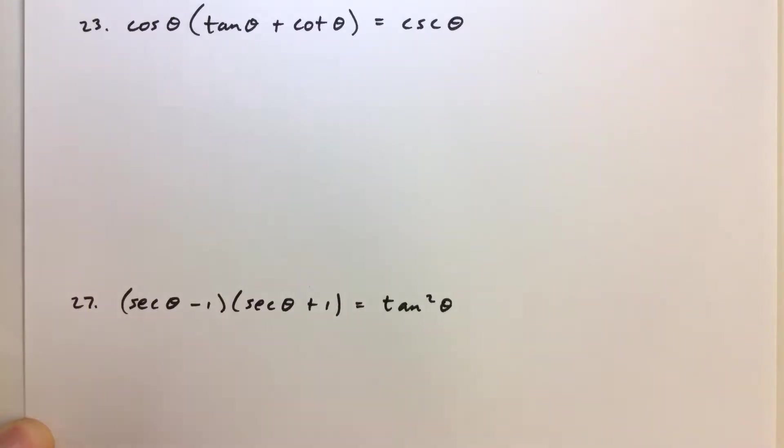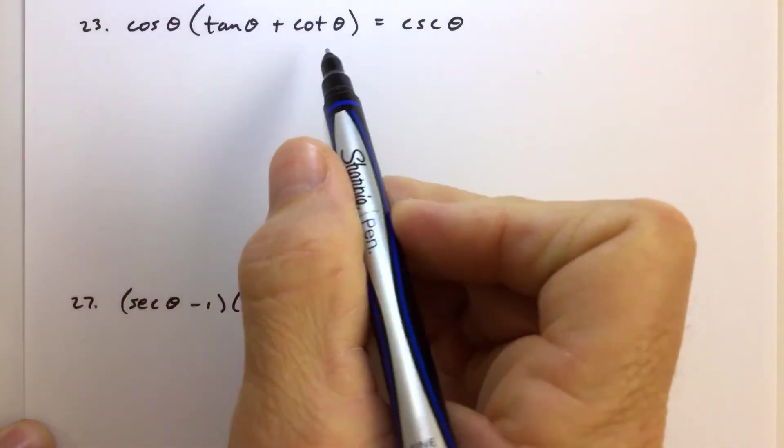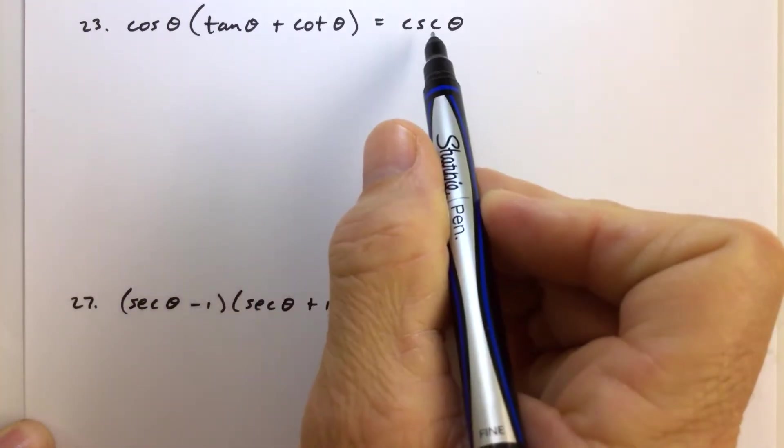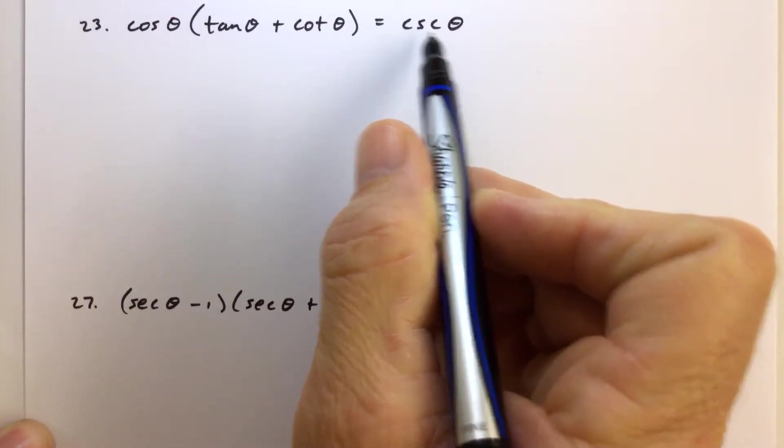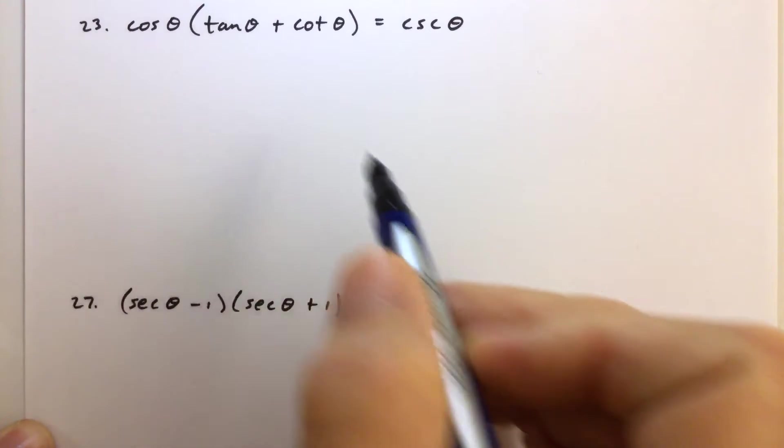the guidelines here, general guidelines are, choose the side that's more complicated. It's easier to take a more complicated side and kind of whittle it down to look like the other side instead of taking one small expression and then try to build that up to the other one.